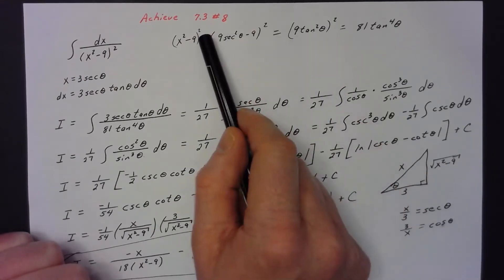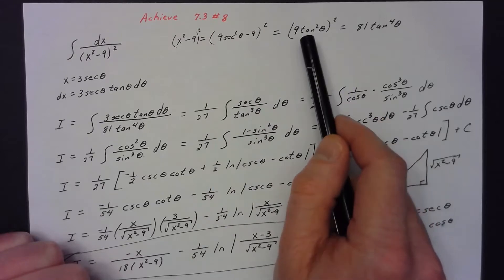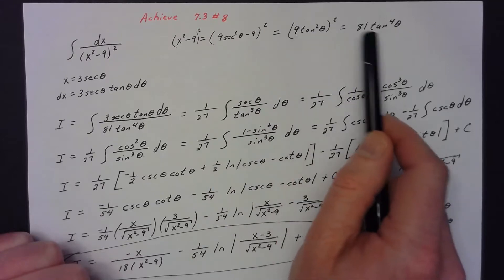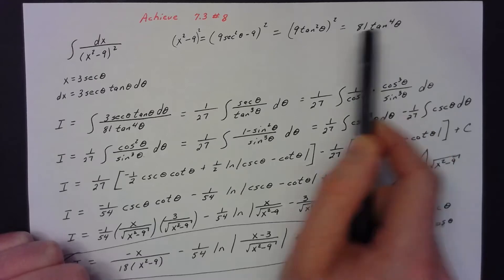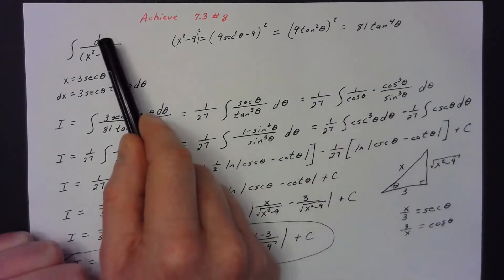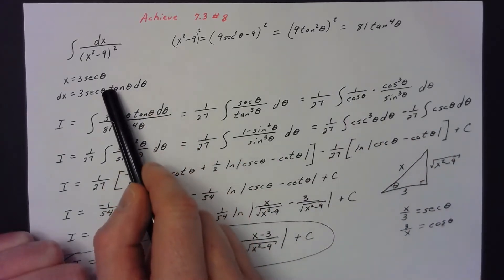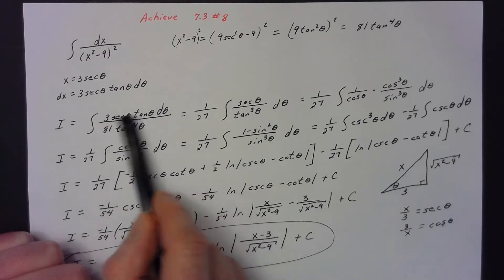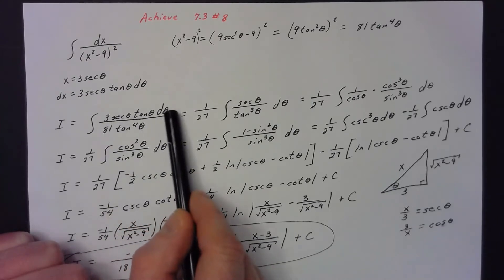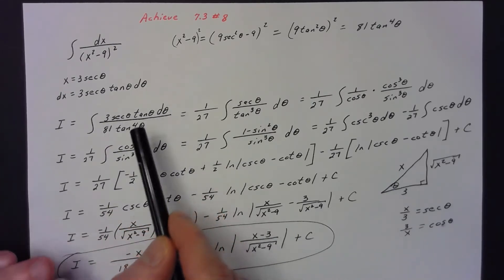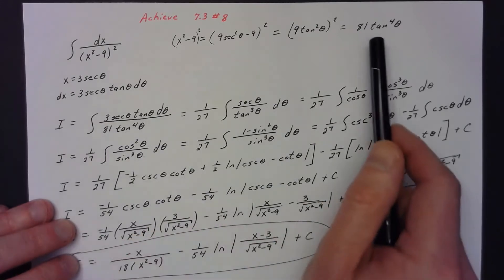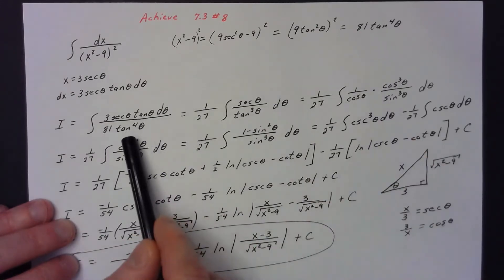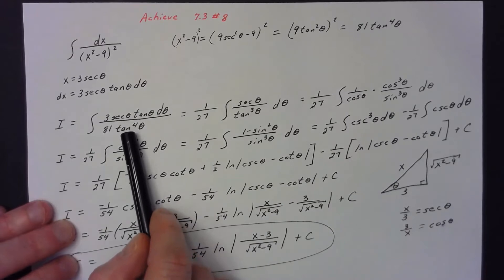But now I was squaring that whole group. So I square 9 to get 81, and I square tangent squared to get tangent to the fourth. Now I go back to my problem. I already know dx is my numerator, so I replace dx with what it's equal to in terms of θ. And my group squared, (x² - 9)², we've already shown is equal to 81 tan⁴ θ.